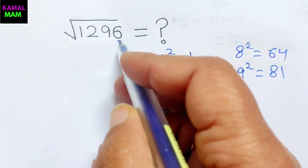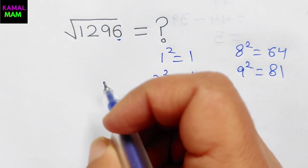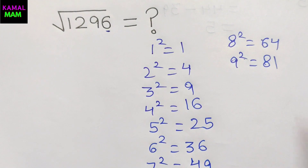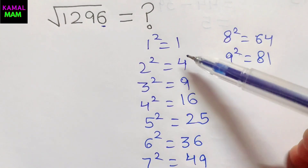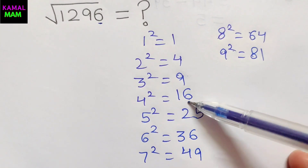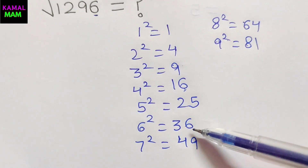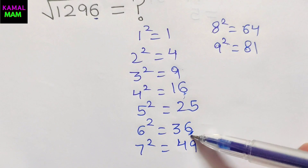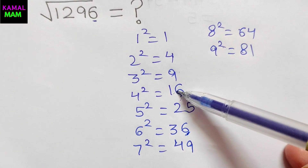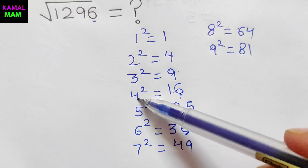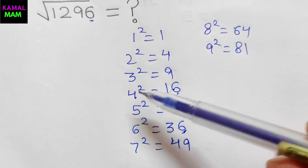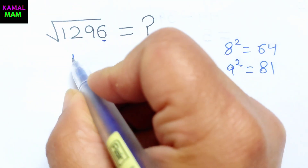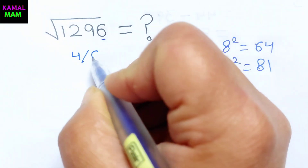Just look at the last digit of the number we have to find the square root of. The last digit is 6, so the answer's unit digit will be either 4 or 6. So firstly write down: the answer unit digit will be either 4 or either 6.